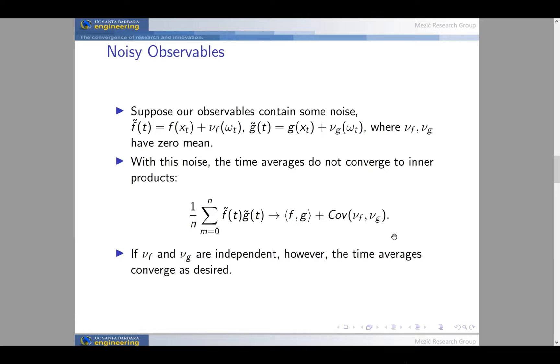If, however, we have the noise in f and the noise in g independent, the time averages can converge as desired. Then we can use our DMD algorithms to generate an accurate representation.